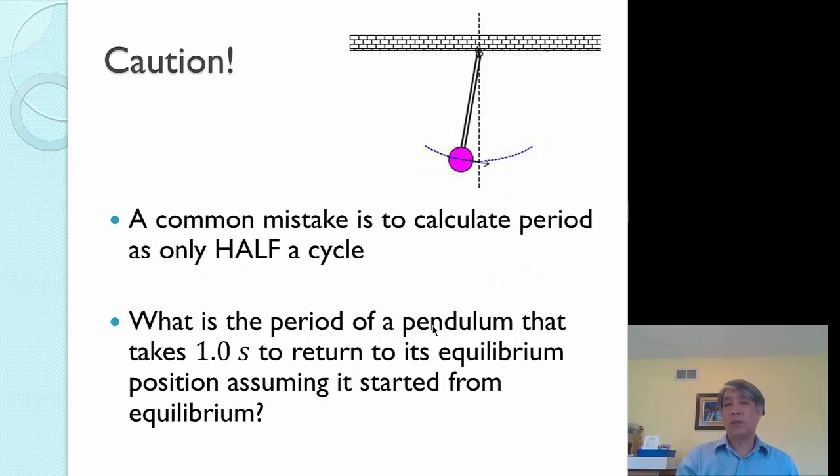Do need to be a little bit careful. Sometimes people make the mistake of calculating period as only half a cycle because we measure a lot of times from the middle. So if I start from the middle and say, well the period is the amount of time it takes to get back to the middle, that would be wrong because I've only done half of the cycle. I've only gone right to middle. I haven't done left to middle. So do be a little bit careful about that.